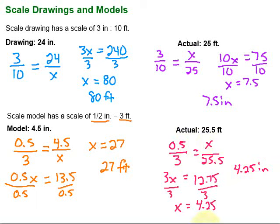And it kind of makes sense because over here, notice, we had the 4.5 on the model. Turned out to be 27 feet in real life. In real life, we have 25.5. On the model, 4.25. So it makes sense because they're very close.